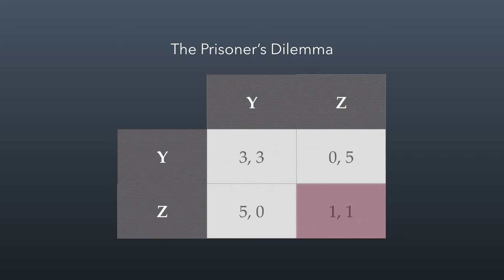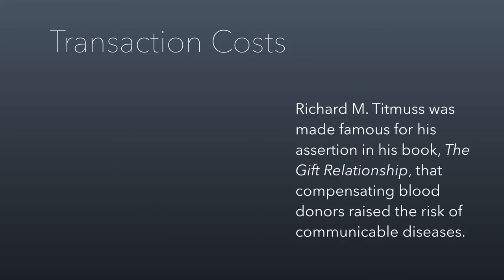Let's talk about the second of the three things, which is that altruism is more efficient because it reduces transaction costs. A transaction cost is the cost of doing business — the cost of purchasing something outside of the purchase price itself.